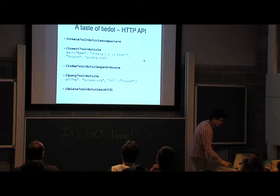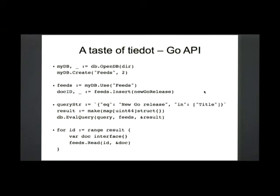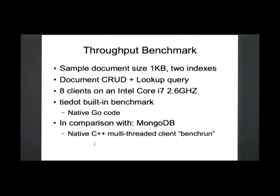The design emphasis also puts a lot of attention on embedded usage. You open a database, create a collection, insert something — currently a map between string and interface, which is how JSON is serialized into a Go structure, but in the future you'll be able to put in virtually any struct you define. You construct a query just like in HTTP, evaluate the query to get results, and then do a follow-up to read the documents back.